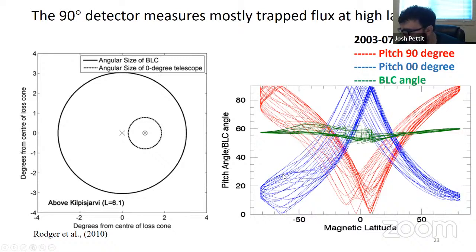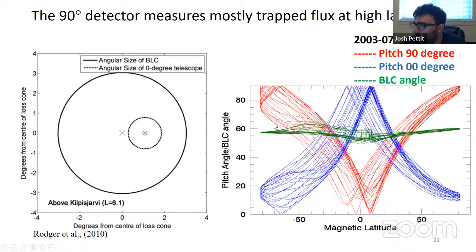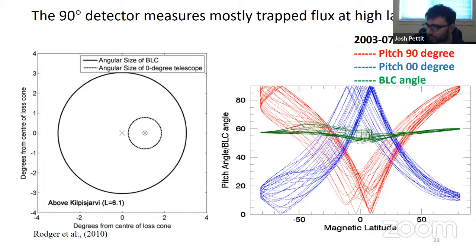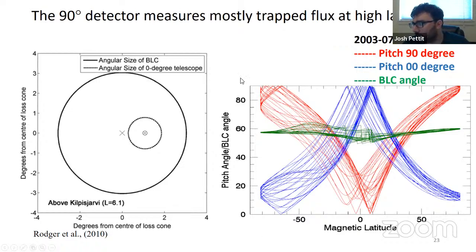This plot shows pitch angle and magnetic latitude on the bottom. The red line shows the 90-degree detector's pitch angle, the zero-degree pitch angle is shown in blue, and the bounce loss cone angle is shown in green. Anything underneath the green line we think is precipitating. At high latitudes, the red curve or the 90-degree detector is measuring trapped while the blue is measuring precipitating. But as you get towards mid-latitudes, this switches. You have to figure out a way to determine what is precipitating and what's trapped between the two. The paper I put out last year talks about it in detail. It's better to use both detectors than just one, because if you just use the zero-degree, you will underestimate the flux.